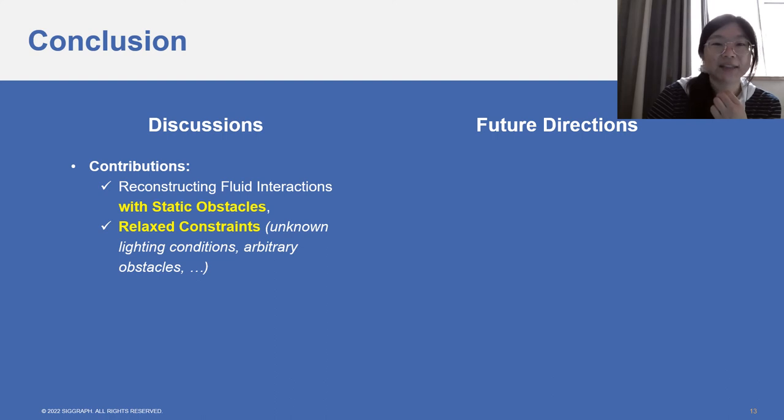Regarding limitations, our algorithm needs a long optimization time. Running our unoptimized code on a single GPU, the simple plume scene takes 30 hours, while the hybrid game scene with complex physics and geometry takes around 60 hours. The time performance can be largely improved with more GPUs. It is also promising to try recent approaches on fast neural representations.